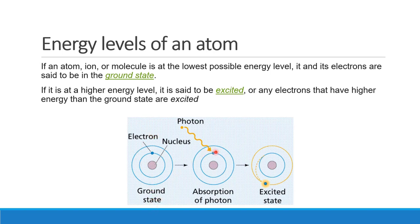Now, you can see an electron in the ground state. If a photon is incident, the electron can absorb that photon and jump to a higher shell — a higher energy level. The energy of the absorbed photon equals the energy difference between the two levels. This moves the electron to a higher energy level.